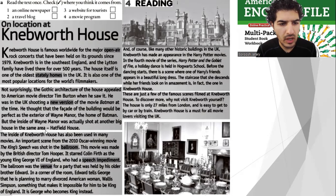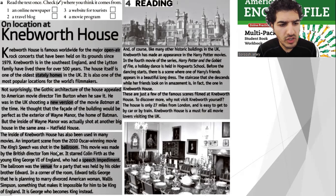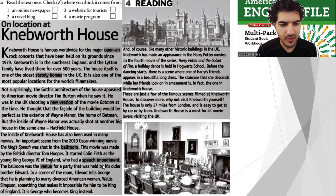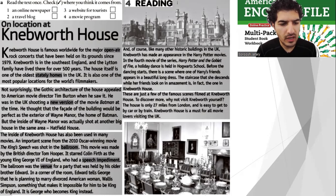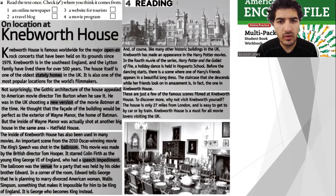But the inside of Wayne Manor was actually shot at another big house in the same area — Hatfield House. The inside of Knebworth House has been used in many movies. An important scene from the 2010 Oscar-winning movie The King's Speech was shot in the ballroom. The movie was made by British director Tom Hooper and starred Colin Firth as the young King George the Sixth of England, who had a speech impediment. The ballroom was the venue for a party held by his older brother Edward, where Edward tells George he is planning to marry divorced American woman Wallis Simpson — something that makes it impossible for him to be King of England. It is George who becomes King instead.